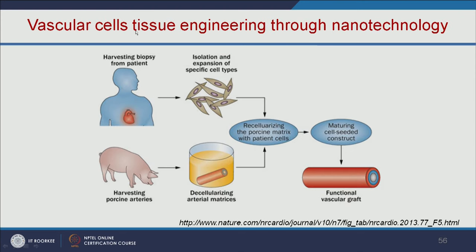For vascular cell tissue engineering through nanotechnology, we harvest cells from the patient and grow them in the lab. At the same time, we harvest arteries from a pig and do the decellularization process to remove all the cells, leaving the arterial matrix. On top of that matrix, we add the cells isolated from the human — recellularizing the porcine matrix with patient cells. When matured, it forms a functional vascular graft.